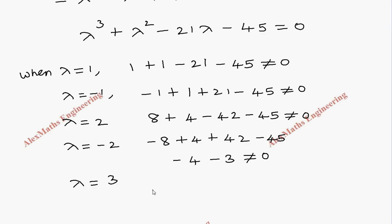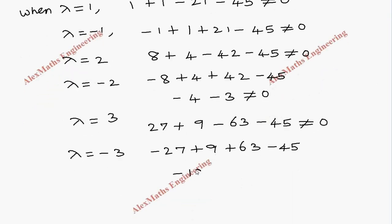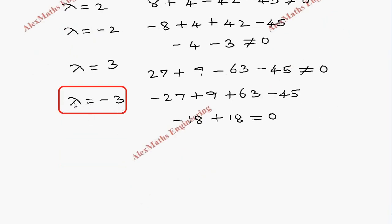Trying lambda equal to 3: 27 plus 9 minus 63 minus 45 — a large negative number, not equal to 0. Now trying lambda equal to minus 3: minus 27 plus 9 plus 63 minus 45. Simplifying: the first two terms give minus 18, and 63 minus 45 gives plus 18, so the result is 0. Therefore lambda equal to minus 3 satisfies the equation, and minus 3 is a factor.